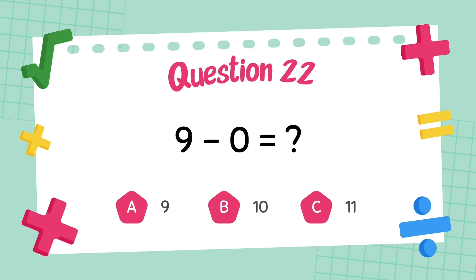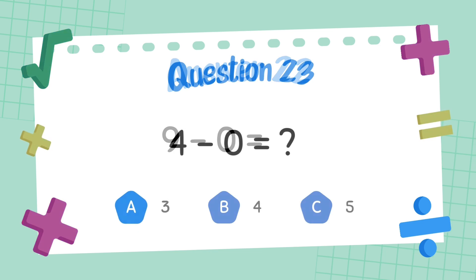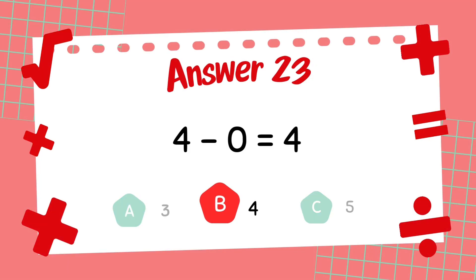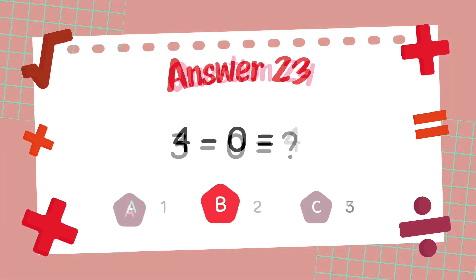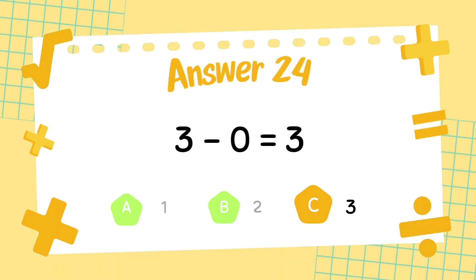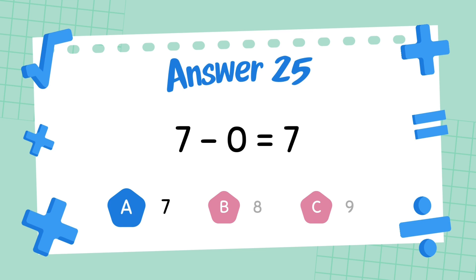What is 9 minus 0? The answer is 9. What is 4 minus 0? The answer is 4. What is 3 minus 0? The answer is 3. What is 7 minus 0? The answer is 7.